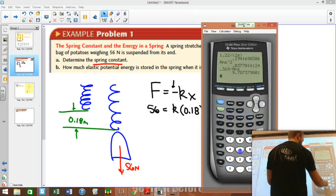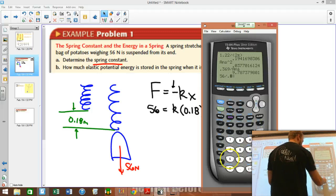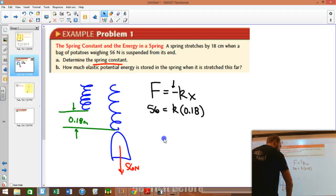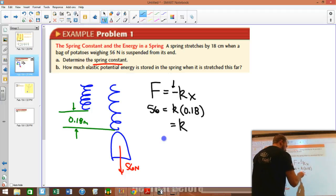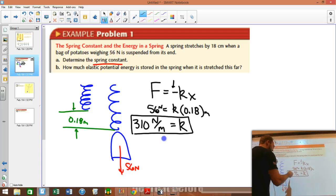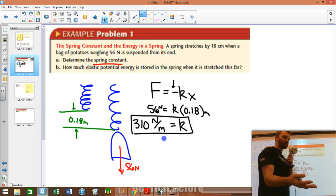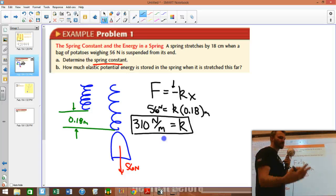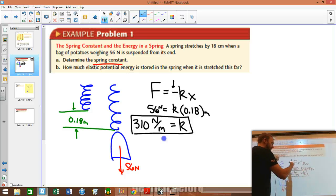So if I take 56 and I divide by 0.18, I end up with 310. So the spring constant here, K, is 310. Now this is Newtons and this is meters, so this becomes Newtons per meter. And if you think about it with a spring, what this is saying is it takes 310 Newtons to stretch this thing 1 meter. And you'll notice that a larger K, like 500, it would take 500 Newtons to stretch it 1 meter. So this is kind of an example using Hooke's Law, part A.